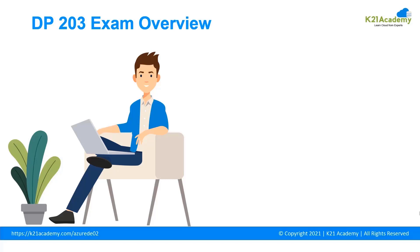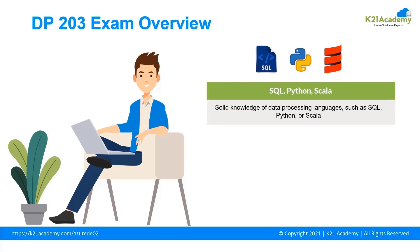Now let us get an overview of the DP203 exam. In DP200 and DP201, you don't need to know Python or Scala. But in DP203, many learning objectives directly refer to Python or Scala. You need to have solid knowledge of data processing languages such as SQL, Python, and Scala. You also need to understand parallel processing and data architecture patterns.